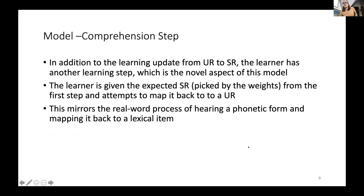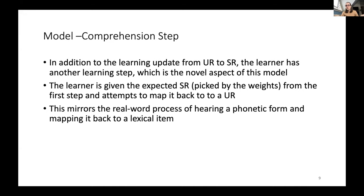In addition to the production learning step mapping from UR to SR, this learner also has another step — the novel edition I posit. The learner is given the expected SR generated by the grammar weights from the first step, and it attempts to map it back to a UR. This mirrors the real-world process of hearing a phonetic form and mapping it back to a lexical item — we're reversing the constraint-based grammar process, imagining the grammar as a listener receiving a phonetic form and attempting to identify which word was uttered.